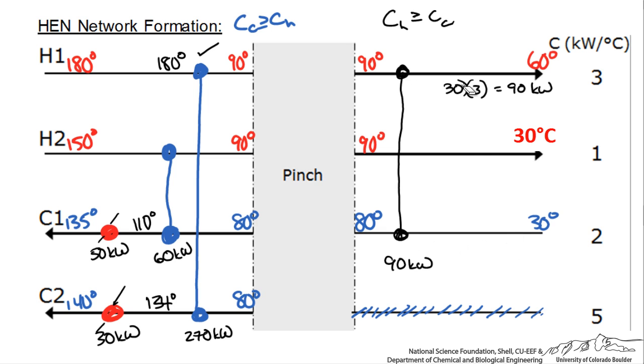We could completely cool our hot stream 1 from 90 to 60, but we can only heat up our cold side stream from 80, which is going to be 35 degrees. We calculate that by 90 equaling 2 times 80 minus x, and you'll see that x is equal to 35.